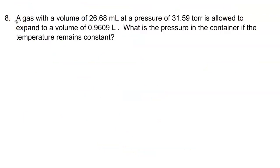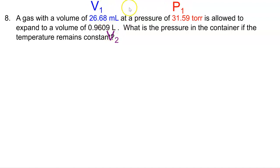Example number eight, which I believe is the last example in Boyle's Law calculations. Please take a moment to pause and label your numbers as P's, V's, and T's. This is a volume because it has milliliters, and this is a pressure — I made them both ones because they're happening at the same instant in time. 0.9609 liters is a volume — if your notes don't say that, please correct it to 0.9609 liters. It's labeled V2 because these occur at the same moment, and we are solving for P2.